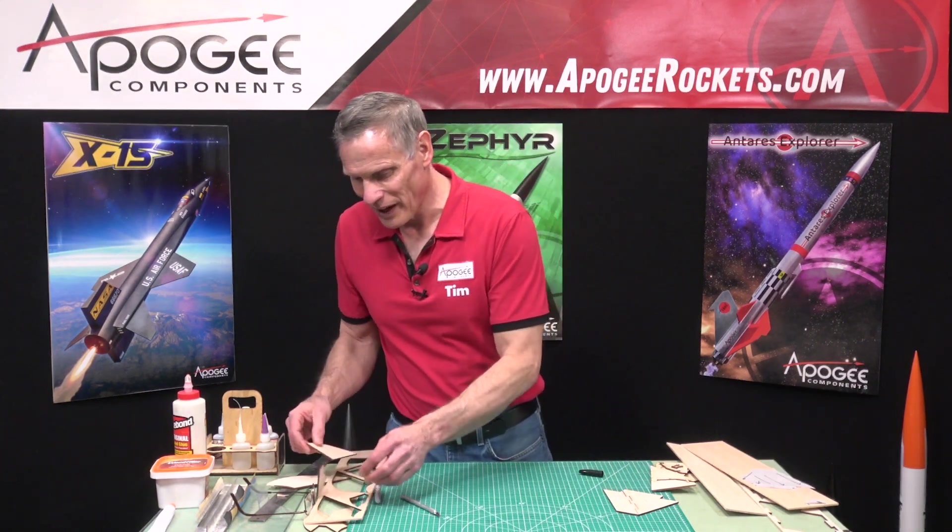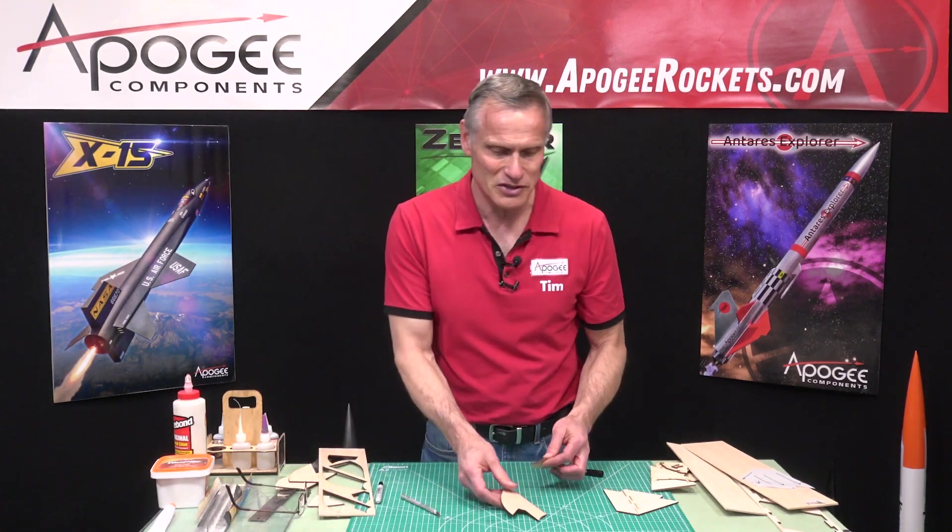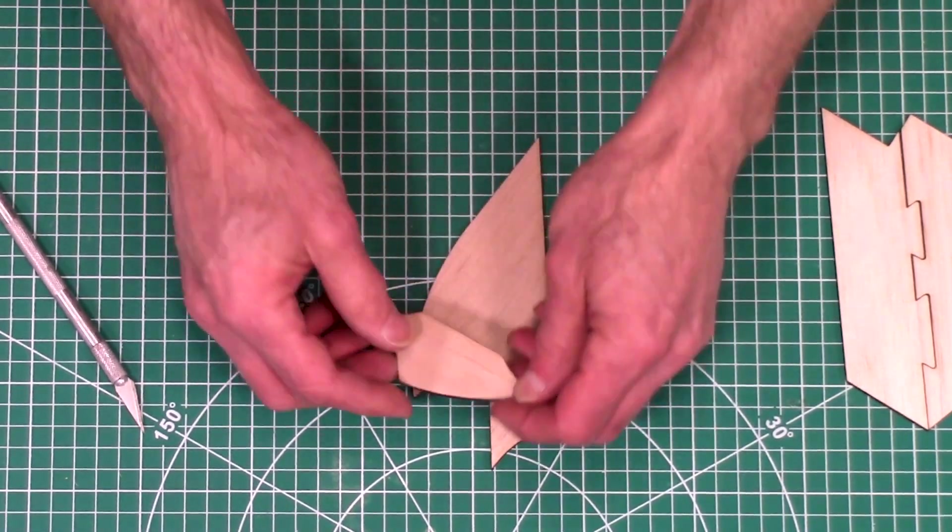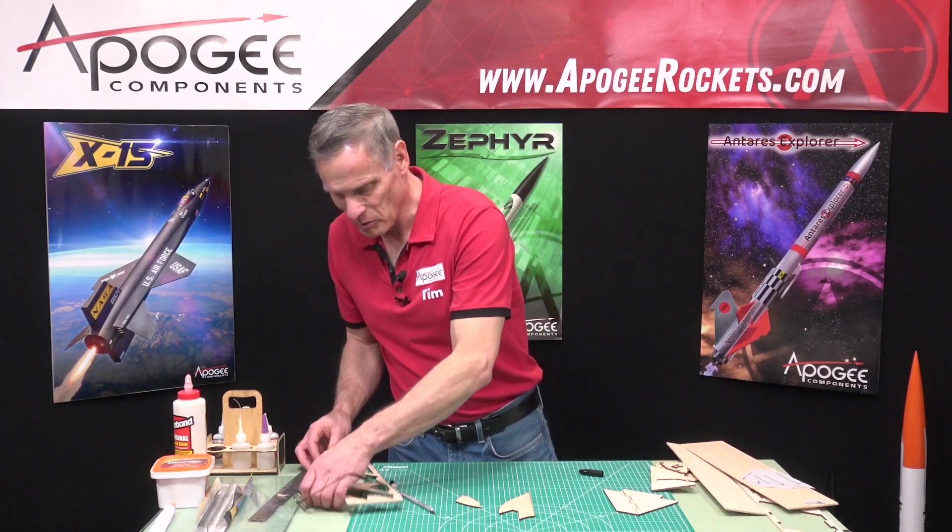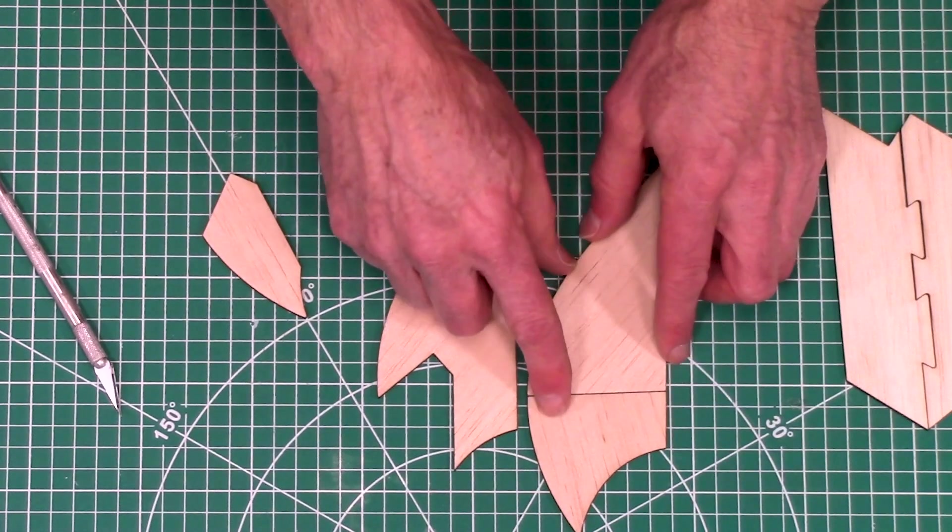So what we do on the situation like that is we try to make the fins so that it can only go together one way. So here's that same fin again. Let me put this one right here for comparison. So that's the way it should go together.